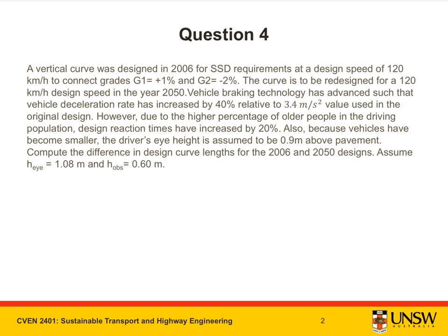The question is: a vertical curve was designed in 2006 for SSD requirements at a design speed of 120 km per hour to connect grades G1 equals plus 1% and G2 equals minus 2%. The curve is to be redesigned for a 120 km per hour design speed in the year 2050. Vehicle braking technology has advanced such that the vehicle deceleration rate has increased by 40% relative to 3.4 m per second squared value used in the original design.